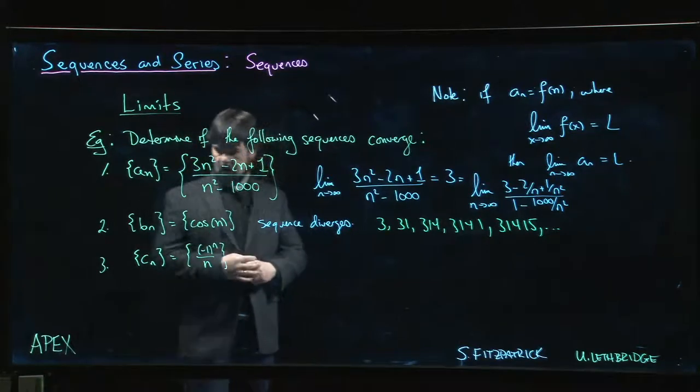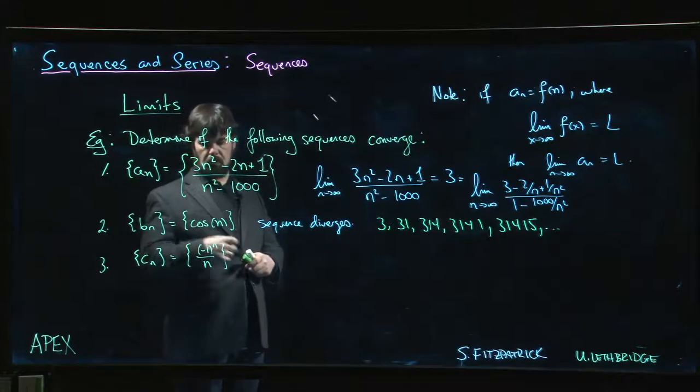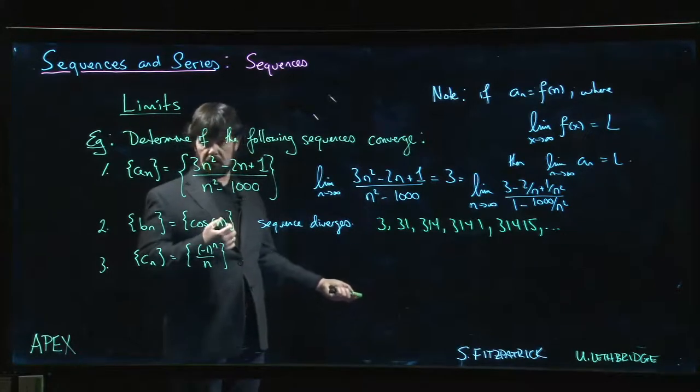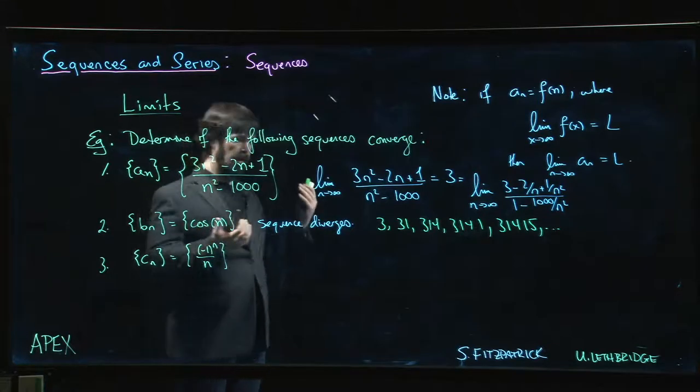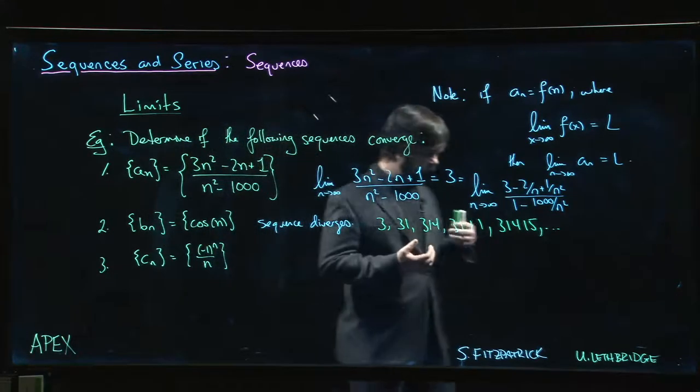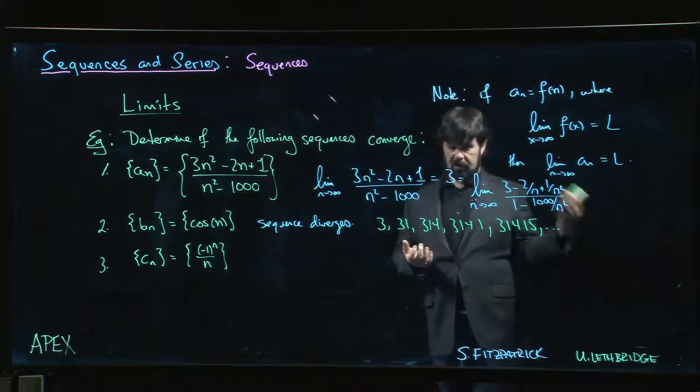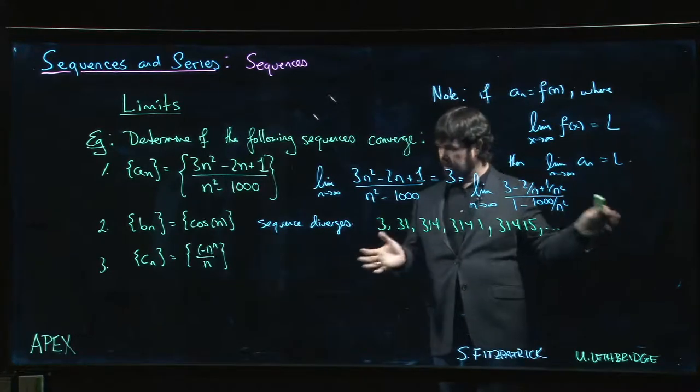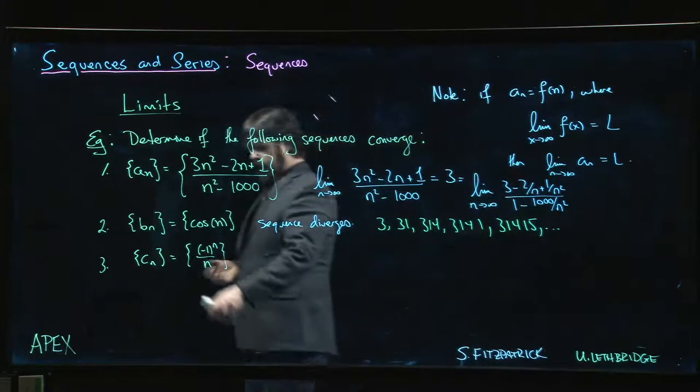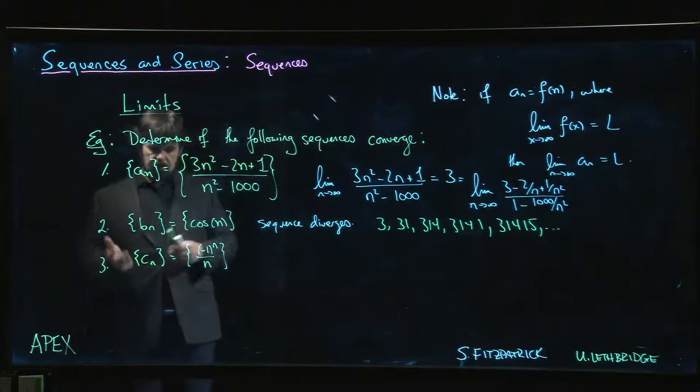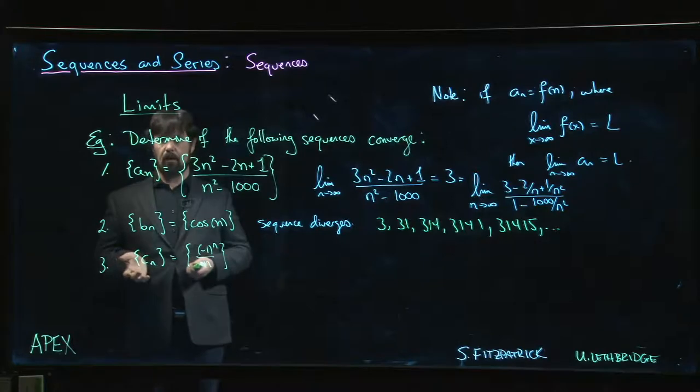We could also consider odd multiples, we can shift things a bit. We can get lots of values that are close to 1, we can also generate values that are close to -1, we can get all kinds of things in between. It's never going to get close to any value, it's going to keep jumping back and forth forever, so that's no good.